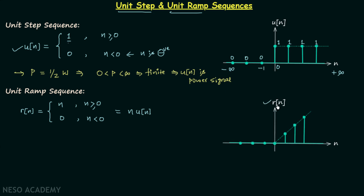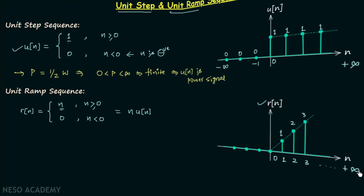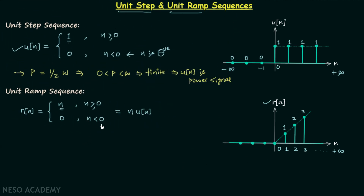Using this definition we will plot the sequence r[n]. When n is equal to 0, r[n] is equal to n, so r[n] equals 0. When n is equal to 1, r[n] is 1. When n is equal to 2, r[n] is 2. When n is equal to 3, r[n] is 3, and so on all the way to plus infinity. When n is less than zero, r[n] is equal to zero, remaining zero for all negative values up to minus infinity. This is the definition and sequence plot of unit ramp sequence r[n].